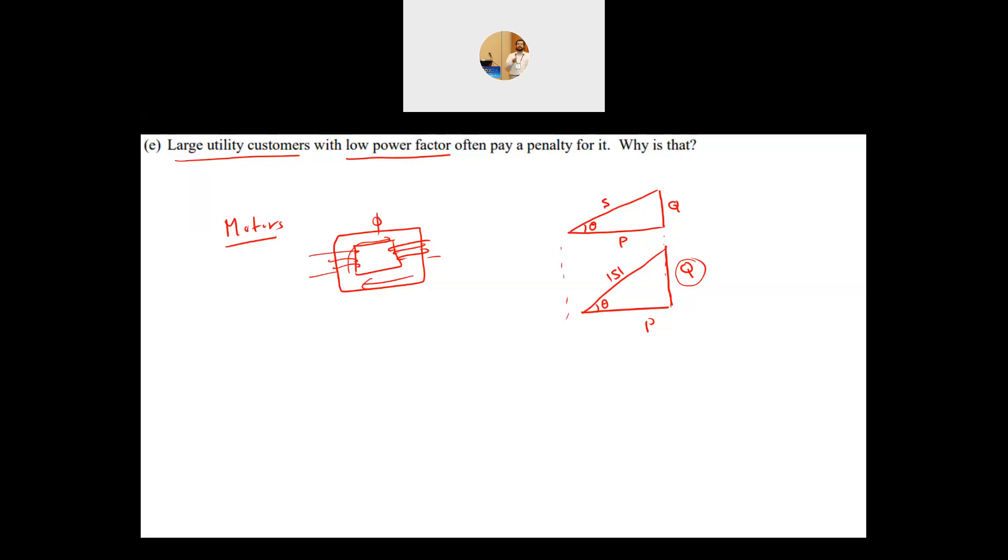Having this understanding, why does the utility penalize you? This is your utility and this is your load. You're consuming P, the real power, plus Q, and the Q is very large. This makes S—from the power triangle, S equals P squared plus Q squared. This S has to come from the generator, which is huge because part of it is the reactive power.